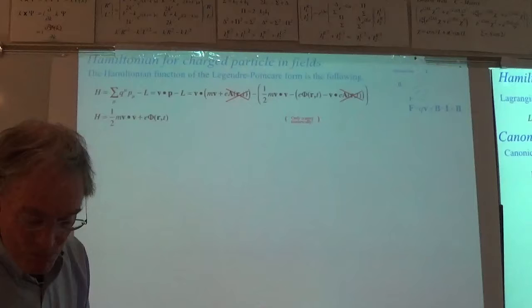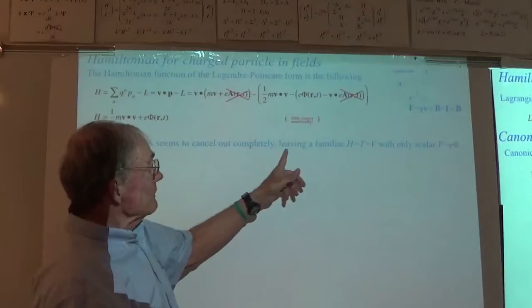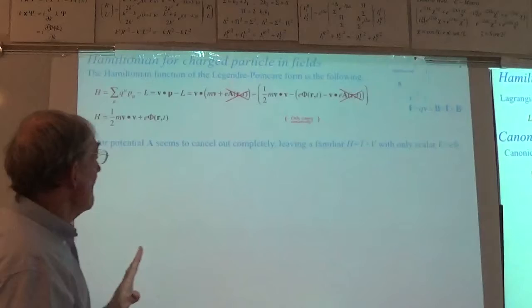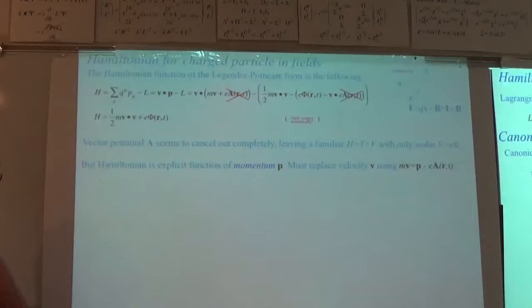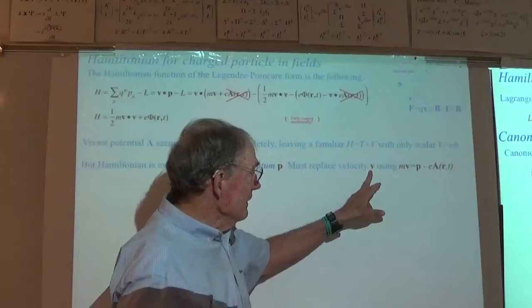We've got to write this thing in terms of canonical momentum — that's the deal. The vector potential seems to cancel out completely, leaving T plus V and a scalar potential — numerically correct, but not formally. You're not going to get Hamilton's equations from that. So the Hamiltonian must be an implicit function of P — we must replace velocity V using: particle velocity equals canonical minus the streaming charge term.